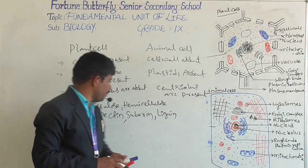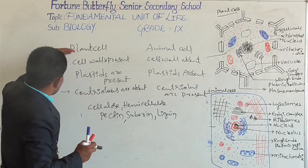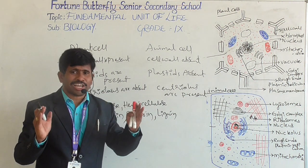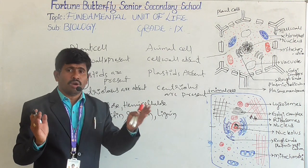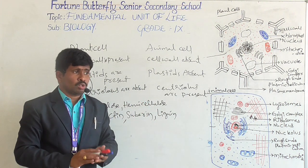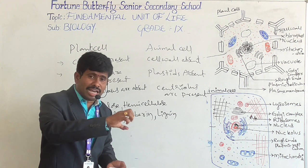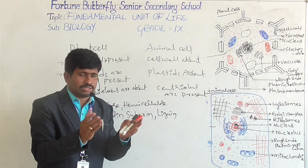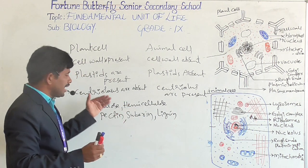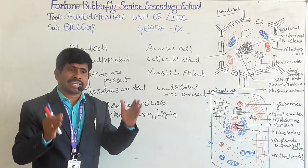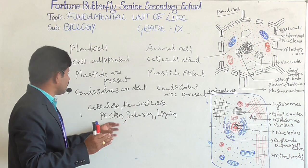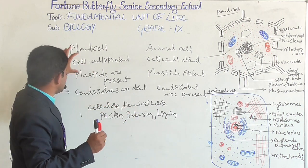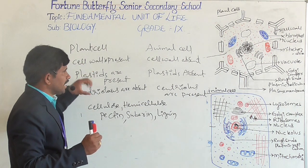What is the main role of the cell wall? The cell wall gives protection to the inner contents. When water is absorbed by the plant, the cell may not burst from inside — the cell wall provides rigidity and gives a definite shape to the cell.